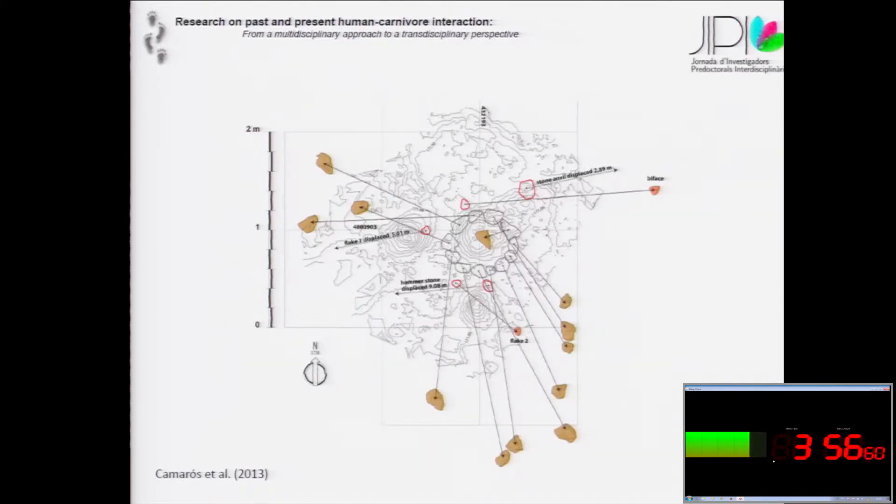The objective of this is comparing how these structures were before and how they were after when carnivores modified. This is a combustion structure modified by carnivores. We then translate all this information to the archaeological record.